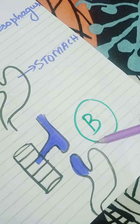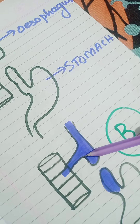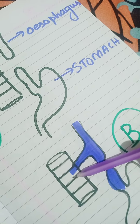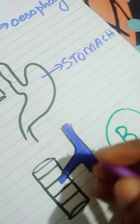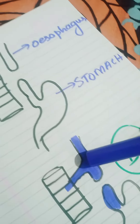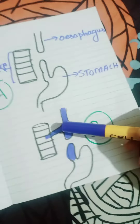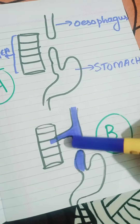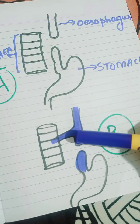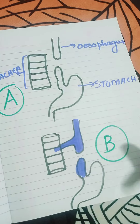Type B: The proximal end of the esophagus forms a fistula connection with the trachea. The proximal end is pouched and connects to the trachea, while the distal end remains blind. This is called Type B atresia.